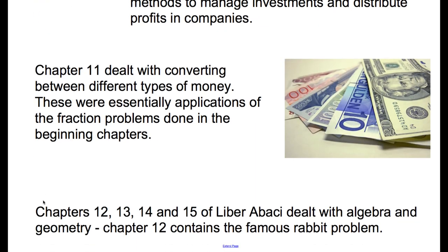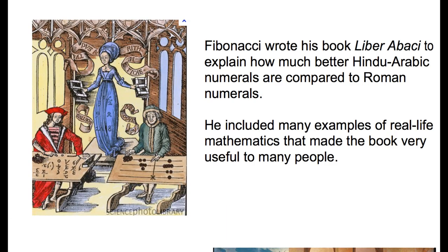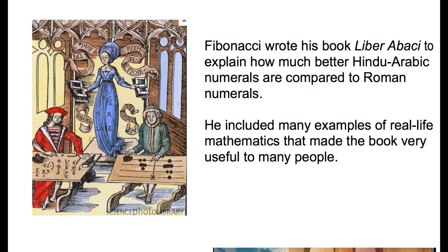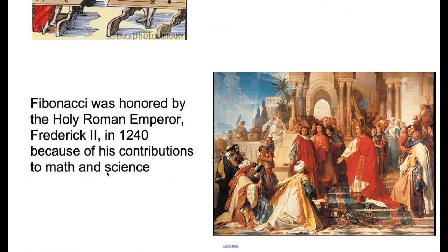In Chapter 11, Fibonacci dealt with converting between different types of money — essentially applications of fraction problems done in the beginning chapters. Chapters 12, 13, 14, and 15 of Liber Abaci deal with algebra and geometry, and it's in Chapter 12 that he has the famous rabbit problem. Fibonacci was honored by the Holy Roman Emperor Frederick II in 1240 because of his contributions to math and science.